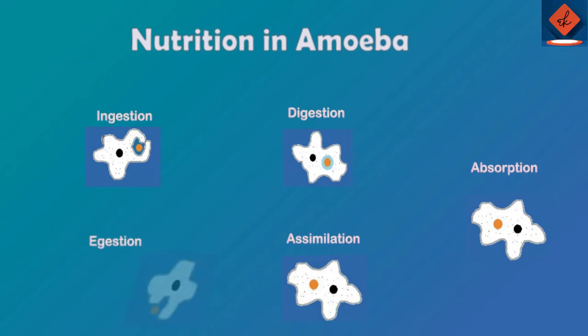Let's understand all the five steps of nutrition in amoeba one by one. The first step is ingestion.